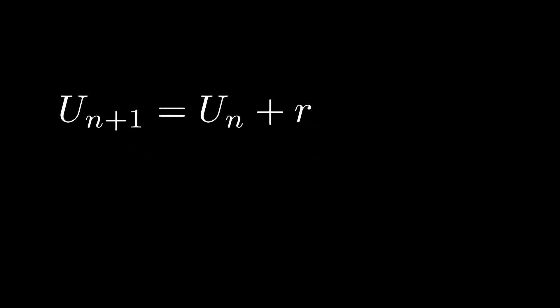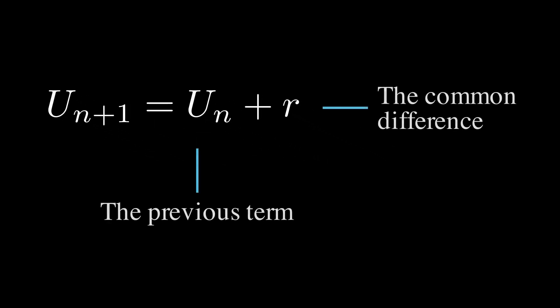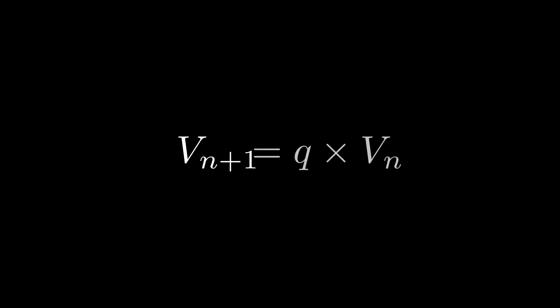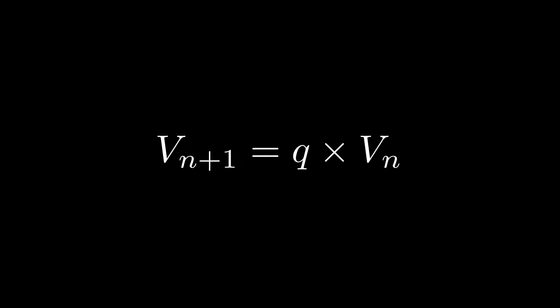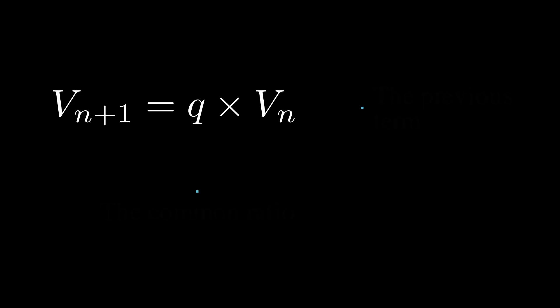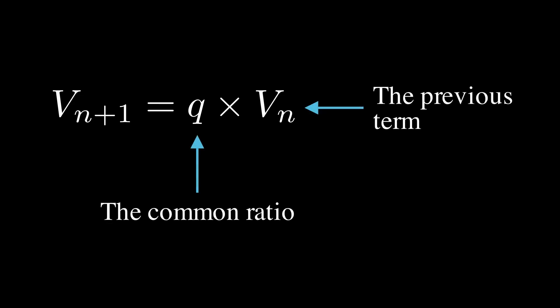When each term is obtained by adding a constant value called the common difference to the previous term, we call it an arithmetic sequence. When each term is obtained by multiplying the previous term by a constant value called the common ratio, we call it a geometric sequence. Of course there are many other types of sequences, but we don't have a specific name to describe each of them.